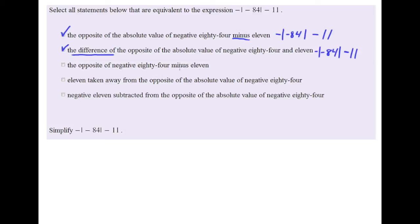The next option: the opposite of negative 84 minus 11. Again we have 'minus,' so we keep things in order. The opposite of negative 84 — put that negative in parentheses — minus 11. This is very close, but what we're missing is the absolute value piece. These are absolute value bars, not parentheses, so this is not the same statement and we leave that box unchecked.